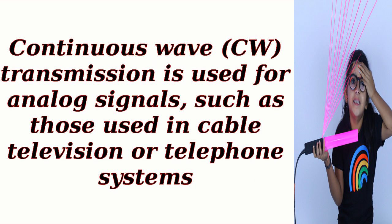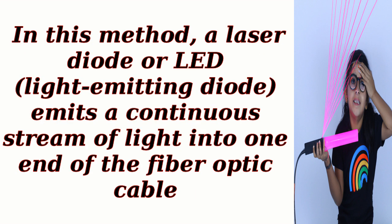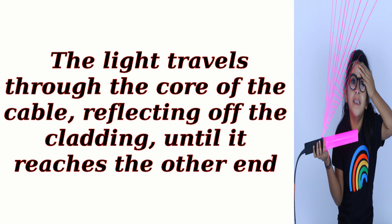Continuous wave (CW) transmission is used for analog signals, such as those used in cable television or telephone systems. In this method, a laser diode or LED (light-emitting diode) emits a continuous stream of light into one end of the fiber optic cable. The light travels through the core of the cable, reflecting off the cladding, until it reaches the other end.